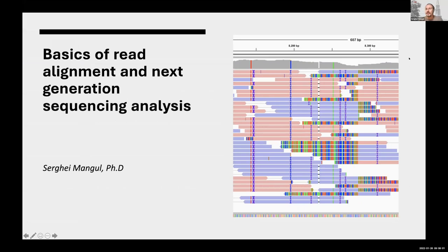This is the last module, so let's get started. We'll talk about basics of read alignment and next generation sequencing analysis. For the course, we have mentioned a few times what next generation sequencing is. By looking at RNA-seq, we are quite well prepared for this module because we know what reads are, what coverage is, and roughly speaking what next generation sequencing analysis is. Given the DNA, you want to sequence that DNA.